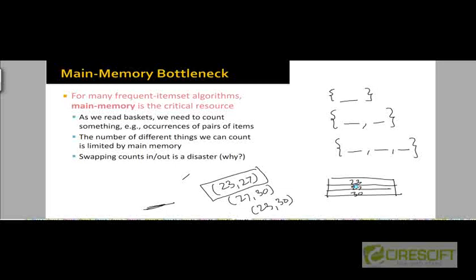Because what pairs we are going to look at next is totally random, we may have to randomly access counts for different pairs of items. That means we may have to frequently access the disk in order to fetch the current count for the pair we are looking at, which may involve a huge number of disk seeks — especially if most of the count data is maintained on disk due to shortage of main memory.